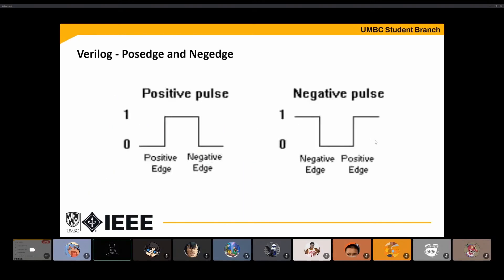Just to make sure we're on the same page: when a signal goes from zero to one, that's a positive edge, or posedge. When it goes from one to zero, that's a negative edge, or negedge — same thing with a negative pulse.